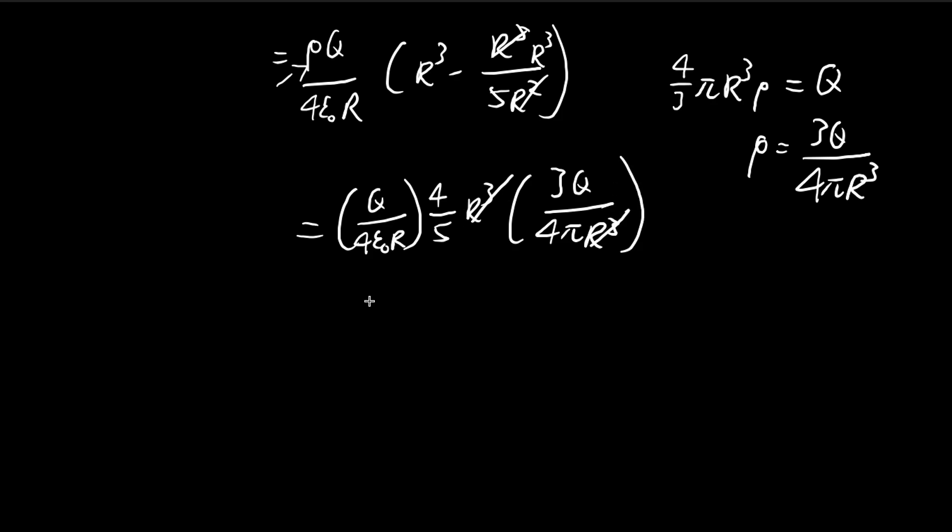You see these cancel out wonderfully—the fours cancel out. I'm going to write these out: 3/5, and group these constants together: 1/(4πε₀), just like in Coulomb's law. So you have Q² divided by R.